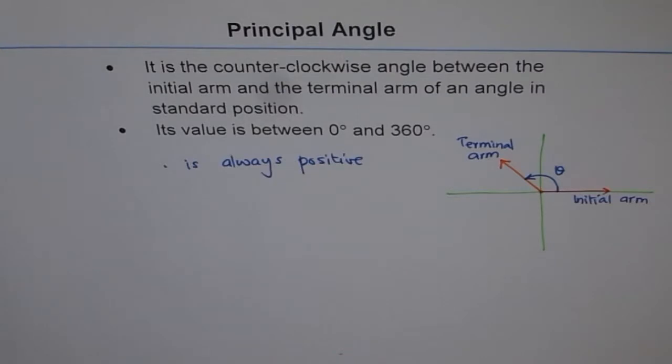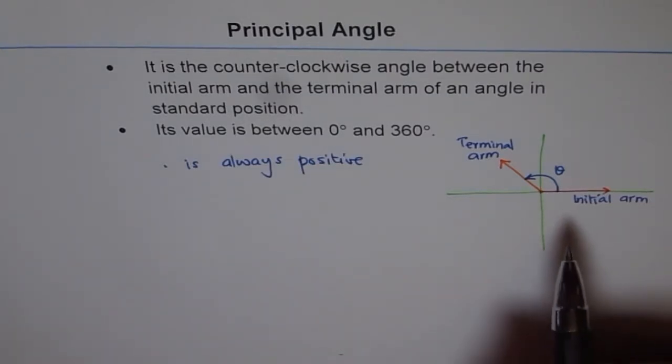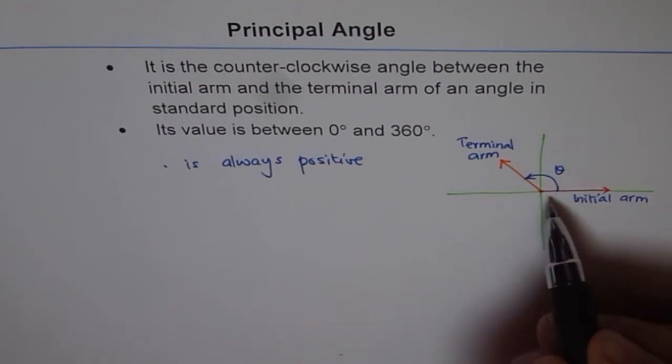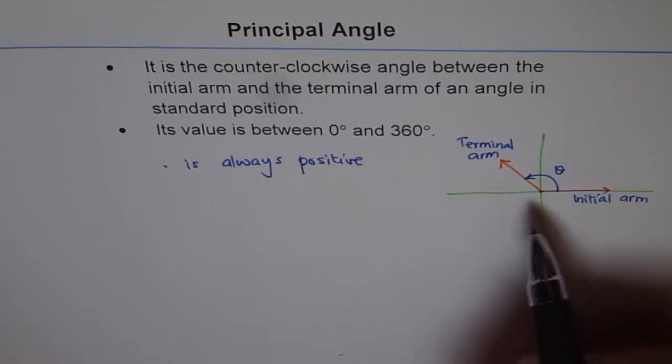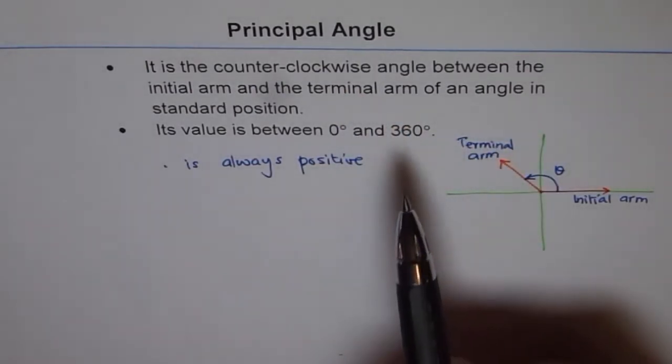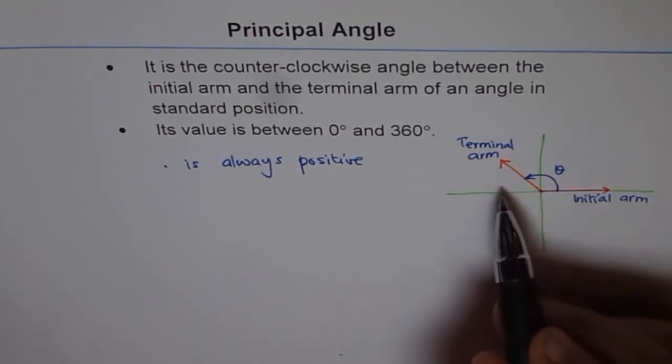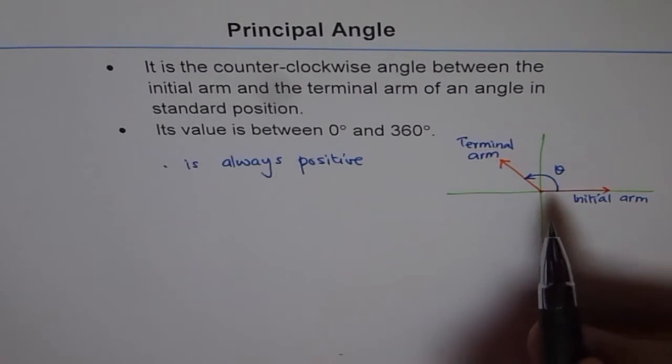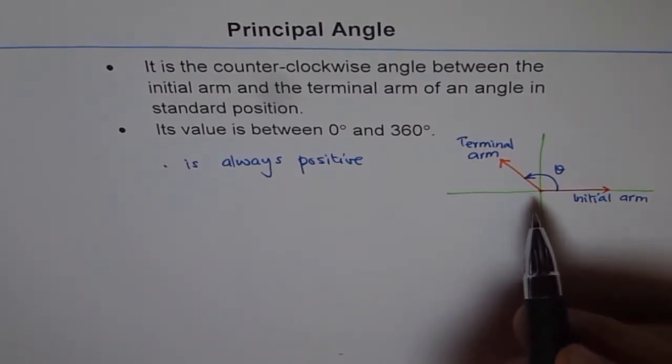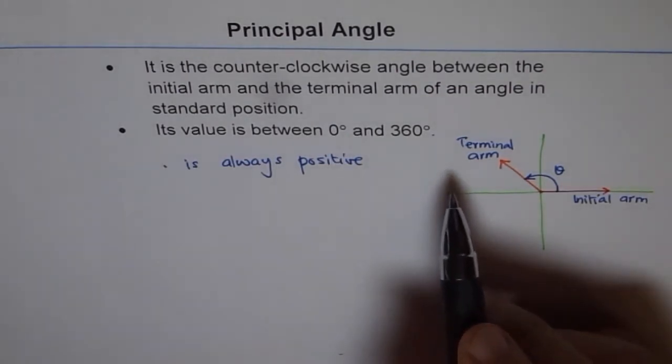Whenever you have an angle in standard position, then you learned that this angle could be positive or negative. It is positive when you go counterclockwise and negative when you go clockwise. But since principal angle is an angle which is measured when you move from initial to terminal arm in counterclockwise, it has to be always positive. So that is very critical. Most important is that the principal angle is only between 0 to 360 degrees.